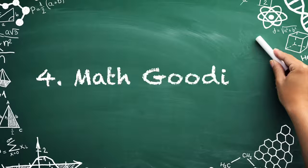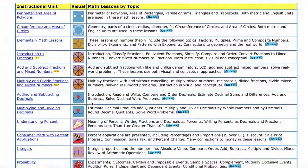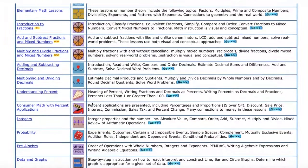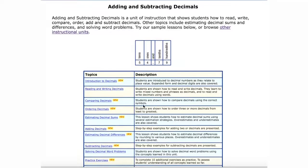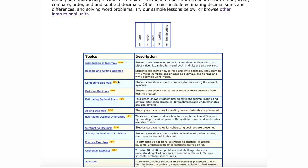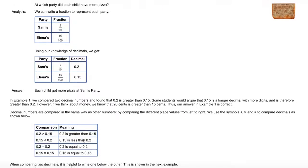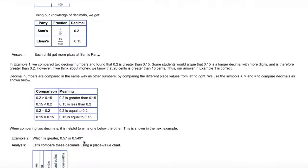Number four: math goodies. Try Math Goodies for engaging and interactive lessons online. The free website appeals to diverse learners by featuring puzzles, articles, and word problems. Playing to the site's content, students can, for instance, read an example-filled walkthrough about how to order decimals. Then they can test their skills by completing exercises and challenges.